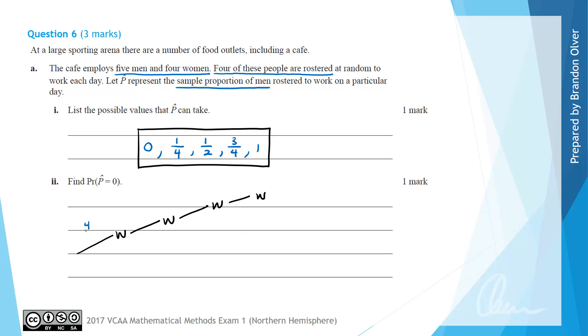The probabilities would then be four out of nine for the first position, three out of eight, two out of seven, and one out of six to select four women to all work at the same time. Therefore, the probability that capital P-hat equals zero is equal to four on nine times three on eight times two on seven times one on six, because we multiply branches along a tree diagram.